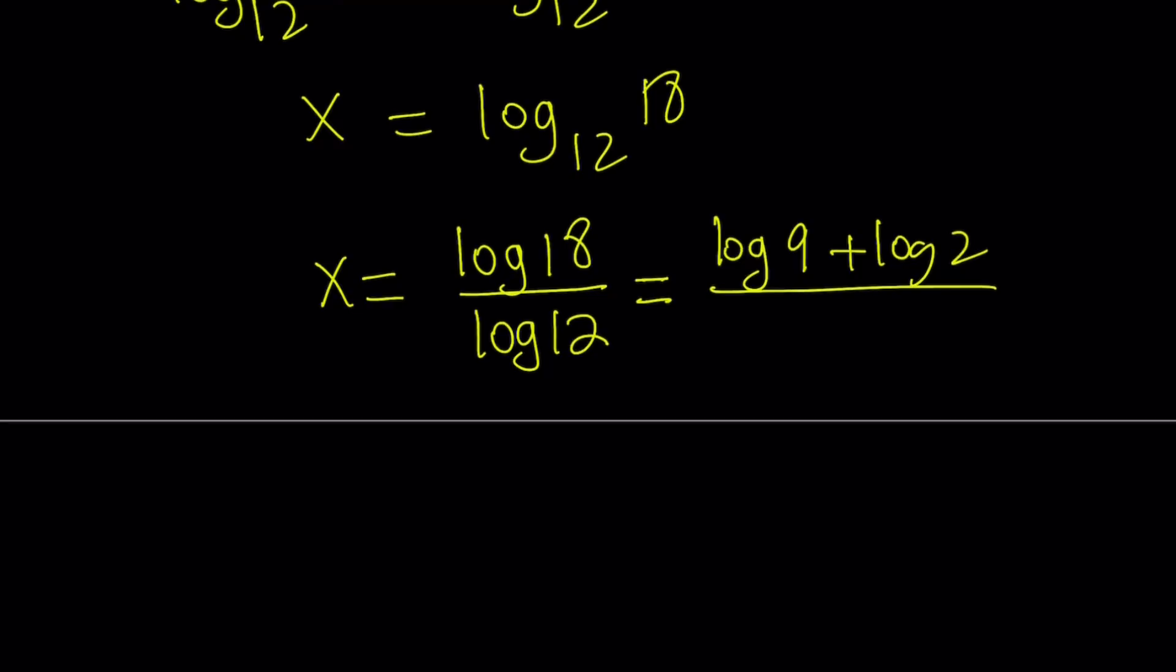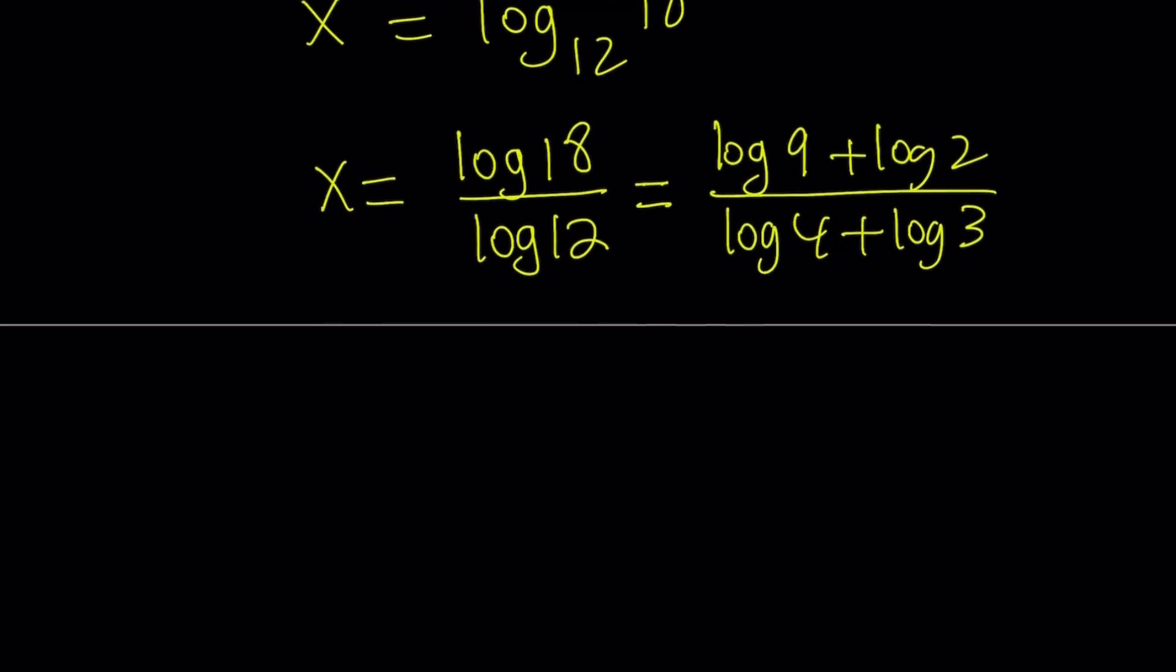And then 12 can be broken down as 4 and 3. Notice that I'm trying to keep the 2s and 3s separate. So kind of like considering the prime factorization. Great.